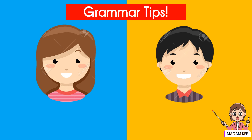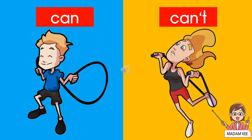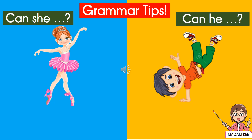We use 'she' when we are talking about a girl. We use 'he' when we are talking about a boy. When we are talking about ability to do something, we use 'can' for yes and 'can't' for no. Start your question with 'Can she' or 'Can he'?